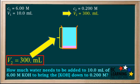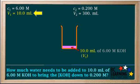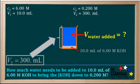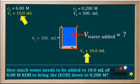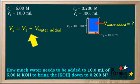Now we know the value for the final volume, V2, and the original volume, V1. So we can calculate the volume of water that needs to be added. We now know that V1 is equal to 10 milliliters, and V2 is 300 milliliters. We can write the equation that the final total volume, V2, equals V1 plus the volume of water added.